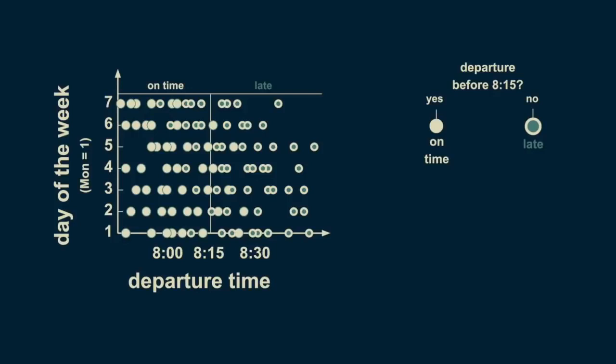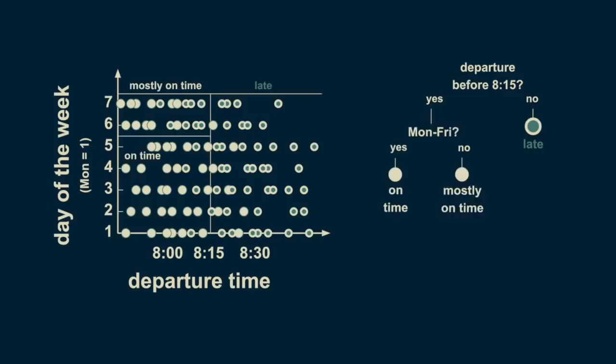To represent this in a decision tree, we can start as we did before by putting a decision boundary at 8:15. Any departure times after 8:15 are likely to be late. Departure times before 8:15 are inconsistent. Before, we assumed that they would be on time, but now we can see in the data that that's not entirely true. To make our estimate better for the weekends, we can subdivide the before 8:15 departure times into weekday and weekend. Now, a weekday departure before 8:15 is confidently on time. However, weekend departures before 8:15 are mostly on time, but not entirely. We have updated the decision tree with a node that reflects this new decision boundary.